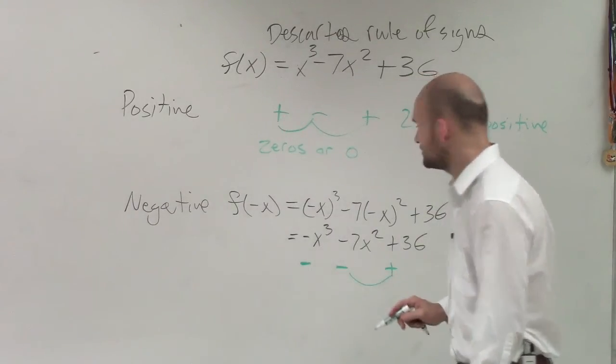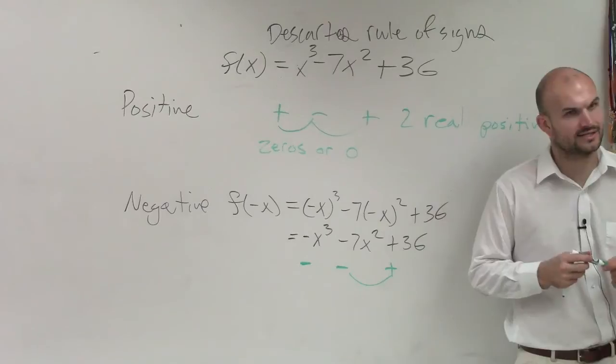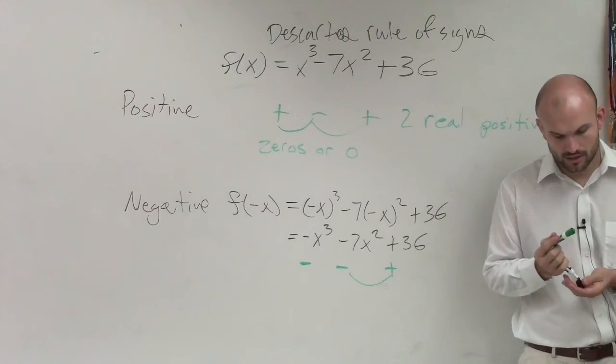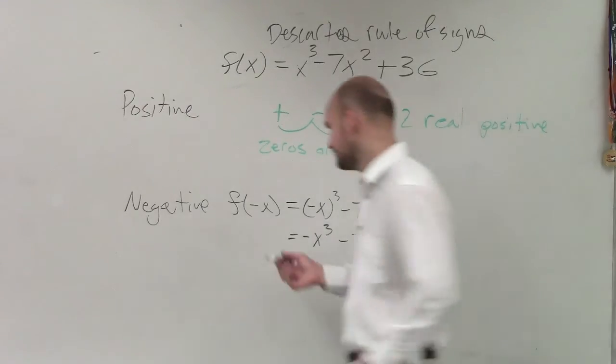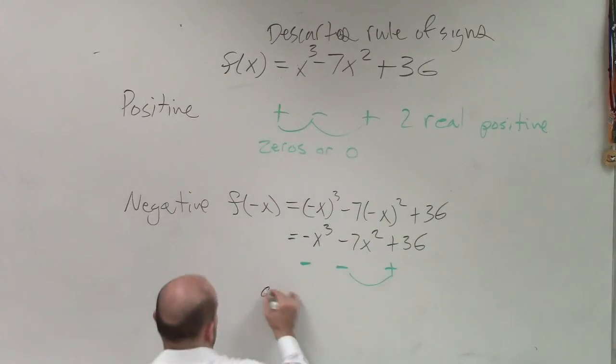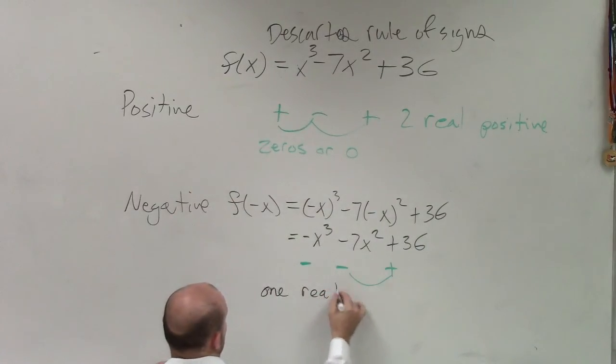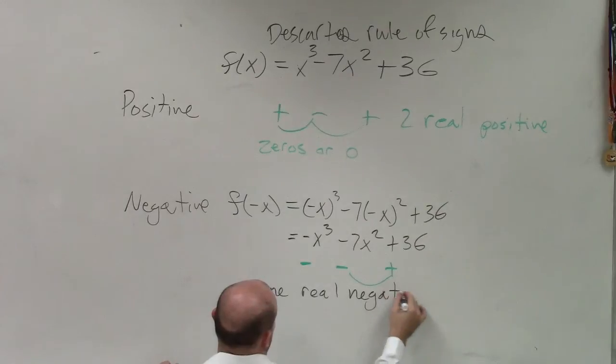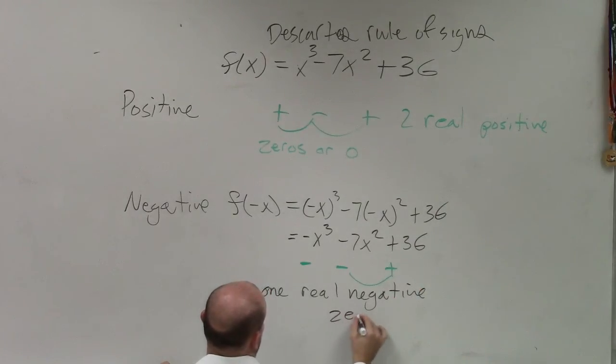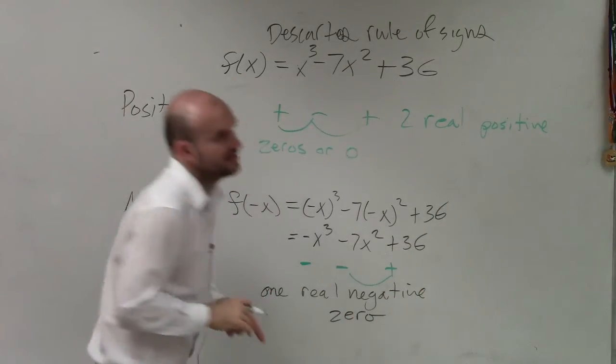And now you guys can see there's one alternating sign. So there is one real negative zero. One real negative zero.